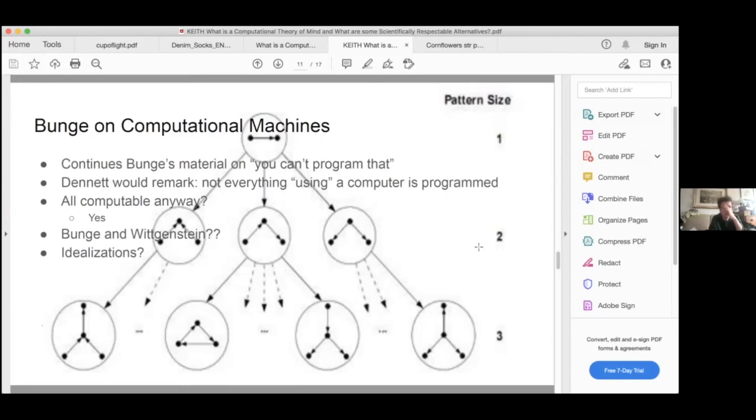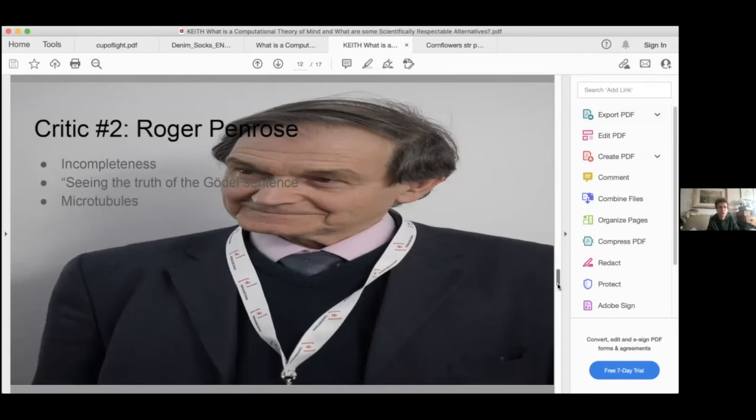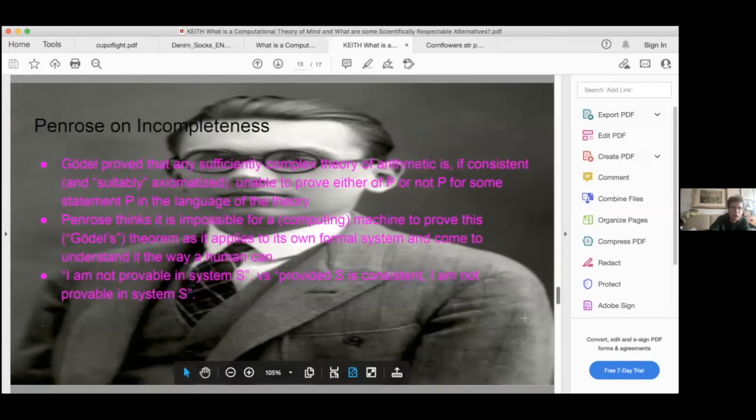Which leads me to Penrose, because Penrose shares some of the concerns that Bunge shares. Here's him, I think he's winning the Nobel Prize here. So he criticizes the computational theory of mind and artificial intelligence through parallel but distinct approaches. Penrose makes use of Gödel's incompleteness theorems, which are, this is Gödel as a young man on the slide here, proved the famous theorem that any sufficiently complex theory of arithmetic is, if consistent and suitably axiomatized, unable to prove either p or not p for some suitable statement p, i.e. something that looks arithmetical, but cannot be proved from within that.